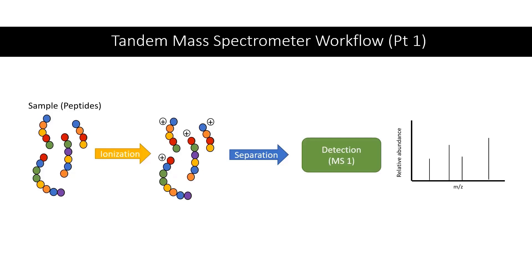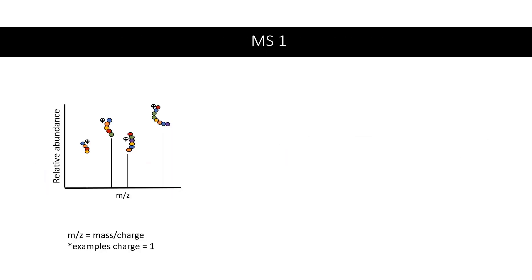Now let's take a closer look at this MS1 spectra. On the y-axis, we have relative abundance, and on the x-axis, we have Mz, which is the mass-to-charge ratio. Again, for the sake of simplicity, we will assume all these examples have a charge of 1, although that is not always the case.